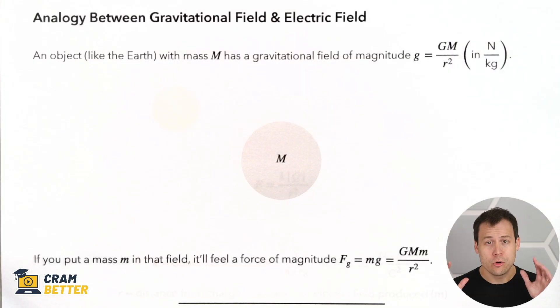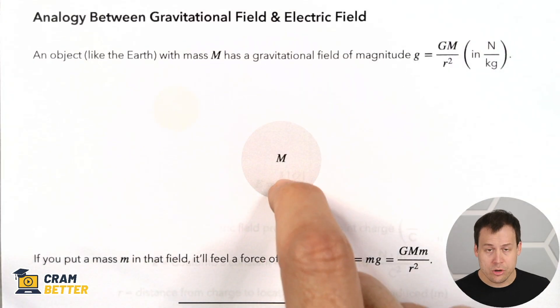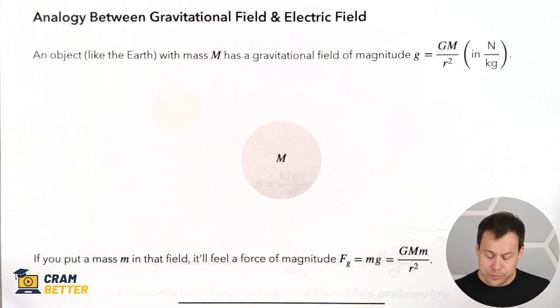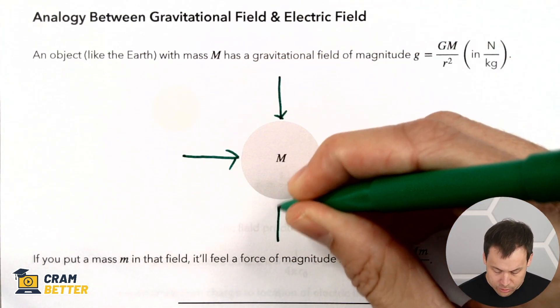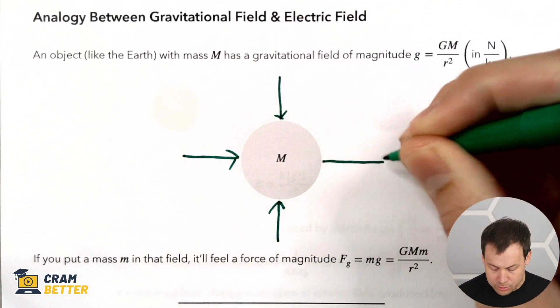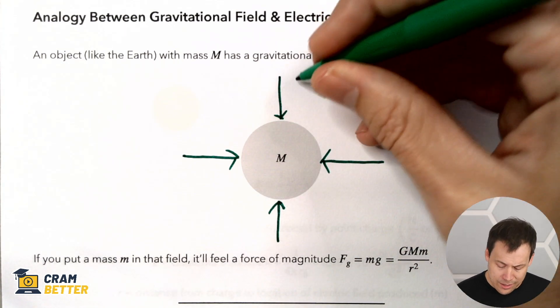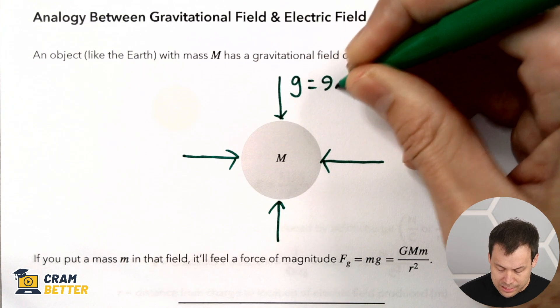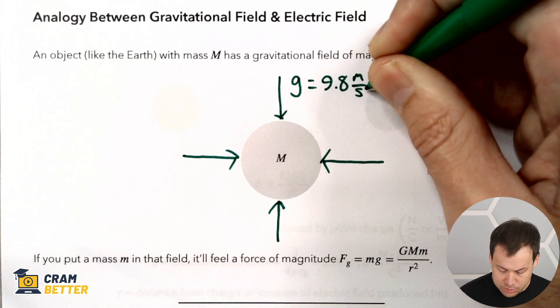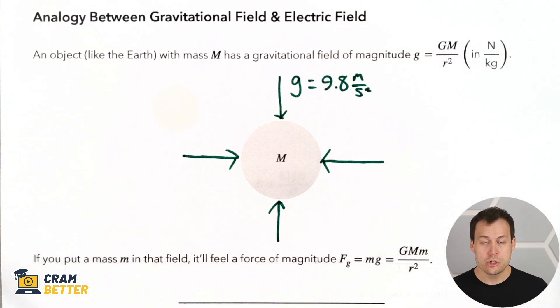Electric field is one of those things most people scratch their heads at when they first hear about it, but I'm going to make it make sense in terms of something you already know. So let's talk about gravity for a second. Here's the Earth. We know that around the Earth there's a gravitational field pointing inward in all directions. Little g on the surface of the Earth is 9.8 meters per second squared — that's called the gravitational field of the Earth.